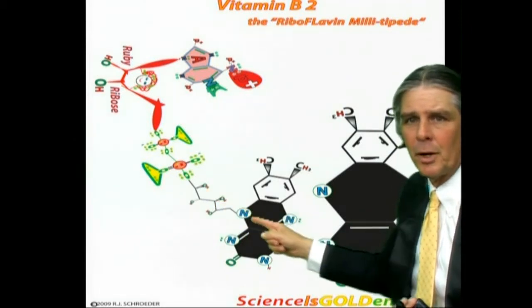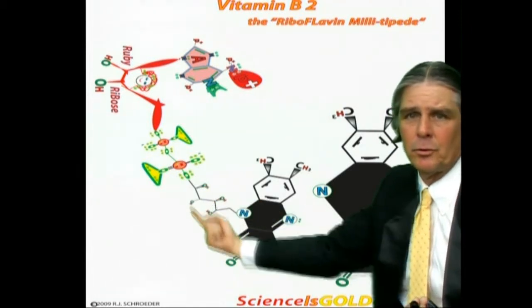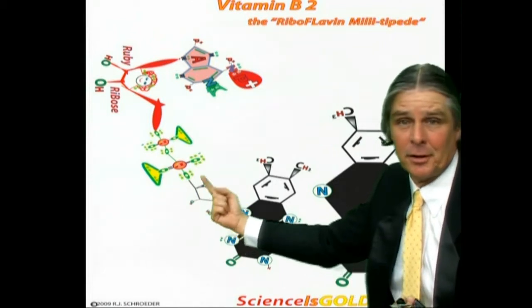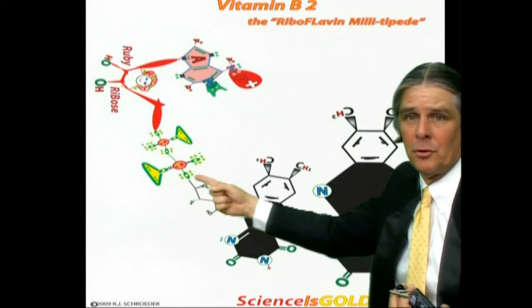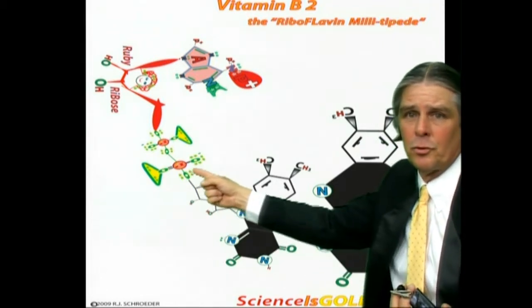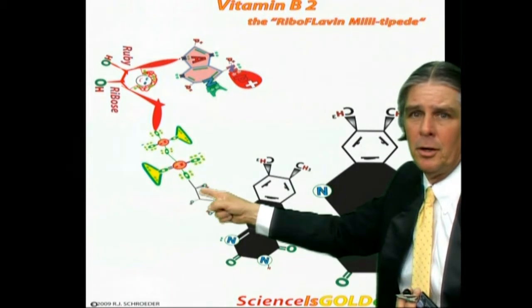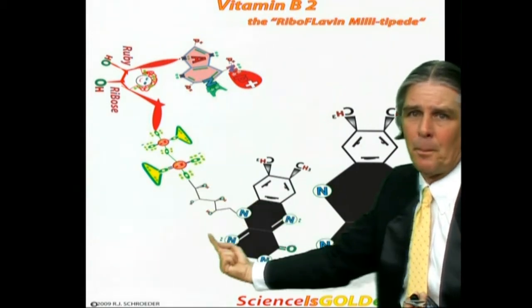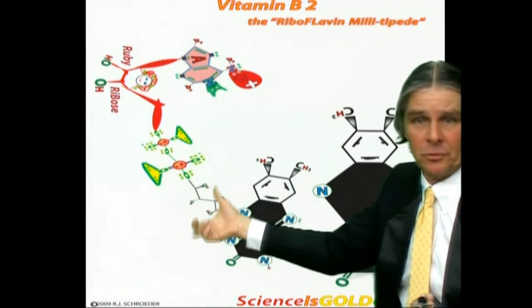The ribose, right on the end of that, had an OH, so that would do a nucleophilic attack on that phosphorus. So this oxygen was probably the alcohol on that, so that popped up on an enzyme.